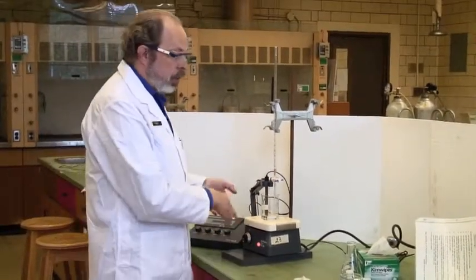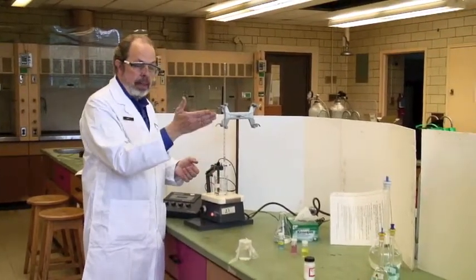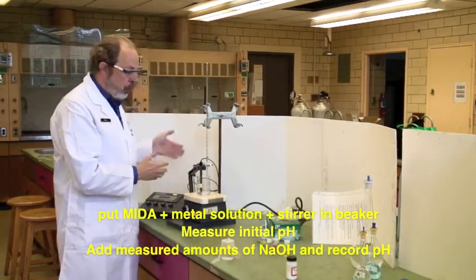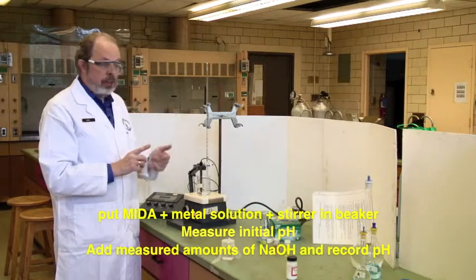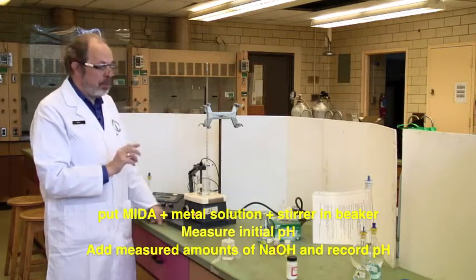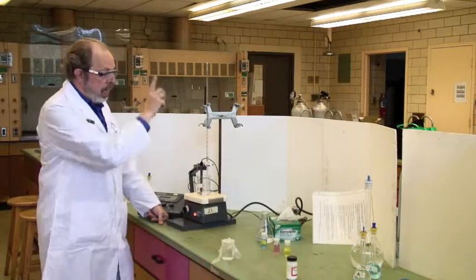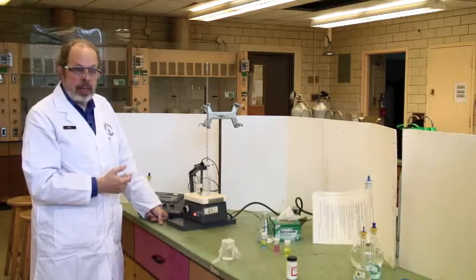When you finish the first titration, discard the material. Add more MEDA and some metal solution. Read the pH before adding any sodium hydroxide—you need that number. Then add sodium hydroxide progressively and monitor the pH.